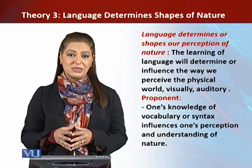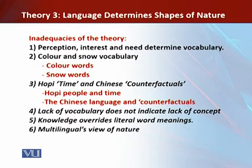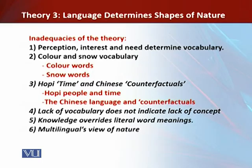Now let's look at some of the inadequacies of this theory. The first point is that perception, interest, and need determine vocabulary. It is our interest and need that determine our coinage of vocabulary and its use. For example, children from all over the world are enchanted by dinosaurs — they perceive the types of dinosaurs, develop interest through that perception, and later feel the need to seek the names of these objects.